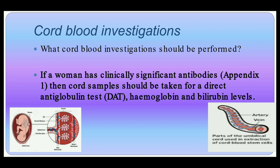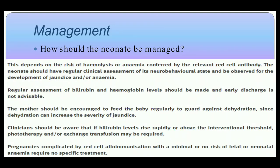If the woman has clinically significant antibodies, cord blood should be taken for direct antiglobulin test, hemoglobin, and bilirubin levels. The neonate's management depends upon the risk of hemolysis or anemia confirmed by the relevant red cell antibody. The neonate should have regular assessment of neurobehavioral state and be observed for jaundice and anemia; regular monitoring of bilirubin and hemoglobin is necessary. Early discharge is not advisable. Mothers should be encouraged to feed regularly to guard against dehydration, as dehydration can increase jaundice severity. If bilirubin rises above the specific threshold, phototherapy or exchange transfusion may be required.